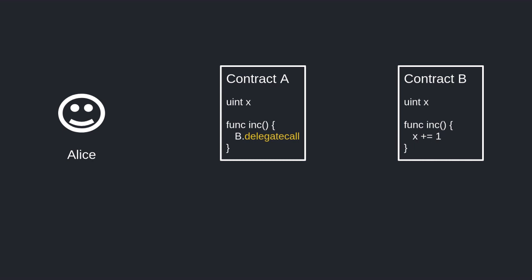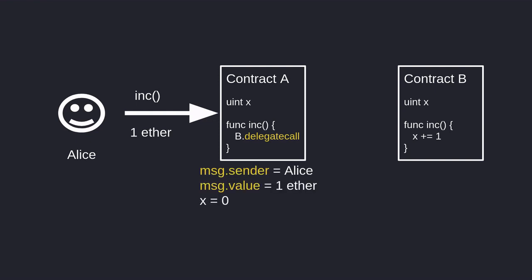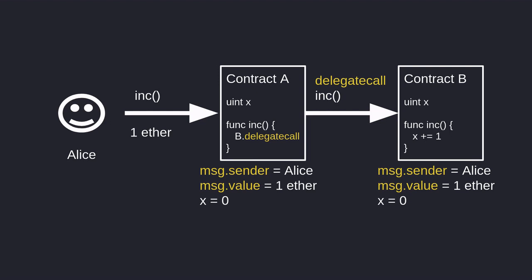Now suppose we use delegatecall inside Contract A to call function increment inside Contract B. Alice again calls the function increment inside Contract A and sends one ether. msg.sender will be Alice and msg.value will be one ether, and the state variable x will be equal to zero. From Contract A it calls function increment inside Contract B using delegatecall. Unlike the previous example, msg.sender will be Alice, msg.value will equal one ether — you can already see that msg.sender and msg.value are preserved to the original values.